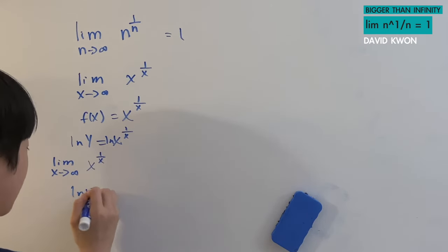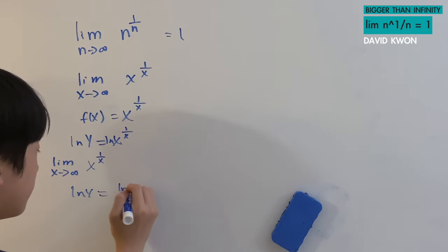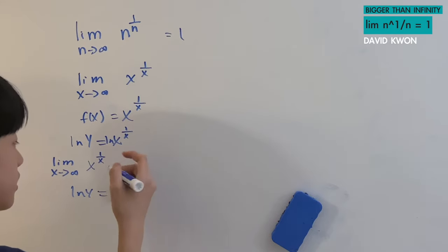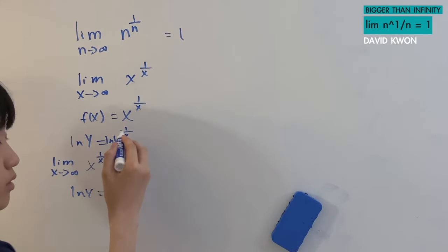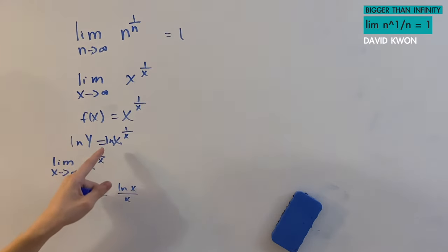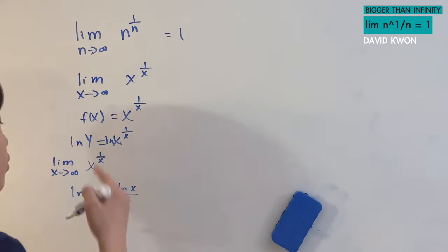When we do, we have ln y is equal to ln x over x, because from the law of logarithm, the power of 1 over x comes down in front, and then that's just ln x times 1 over x.